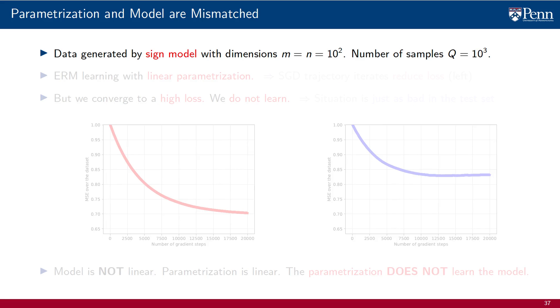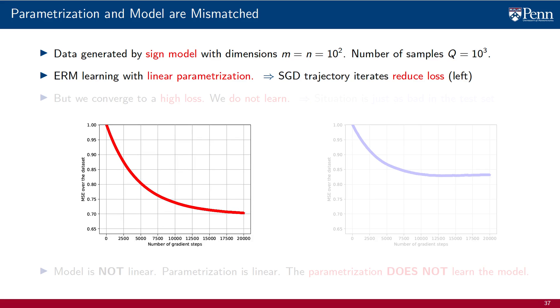As an example of a different nature, consider the sine model with the same dimensions and the same number of samples. We are still using ERM with a linear parametrization, same as before. And when we look at the SGD trajectory, we see that the loss is again reduced. We are succeeding at solving the ERM problem. This is just a property of SGD. SGD is working as we know it should.